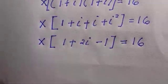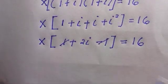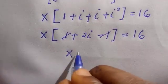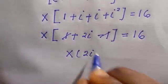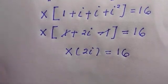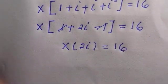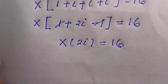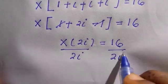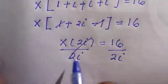And for the i square is minus 1, so everything equals to 16. We have 1 minus 1 in the parenthesis, which cancelled, so we have x multiplying 2i equals 16.